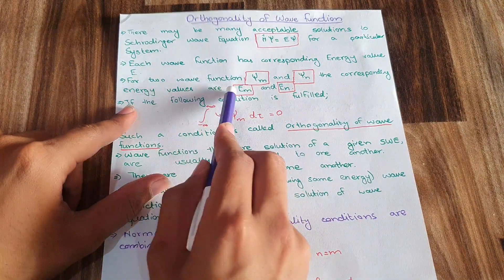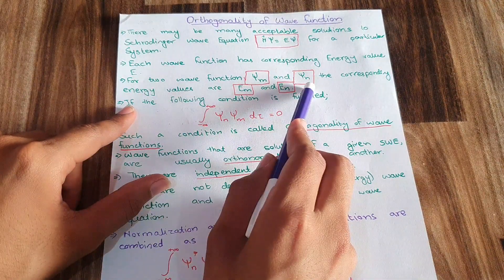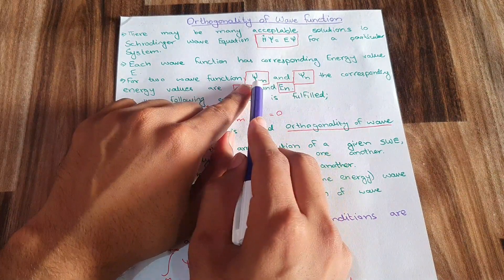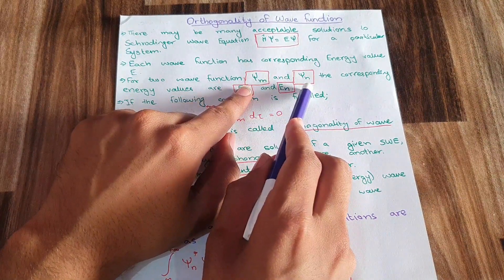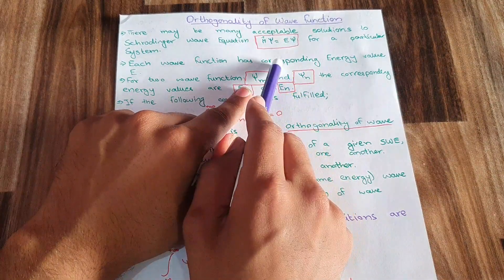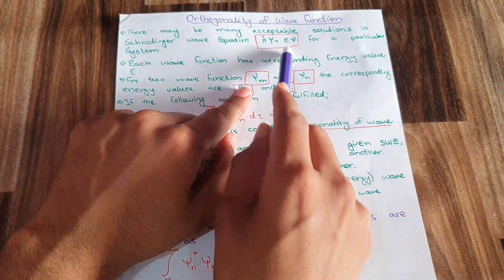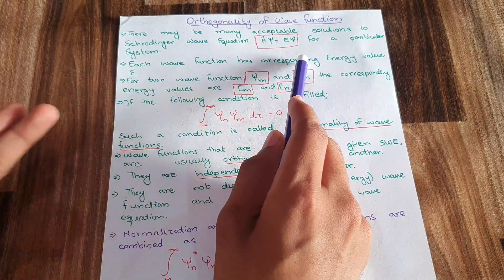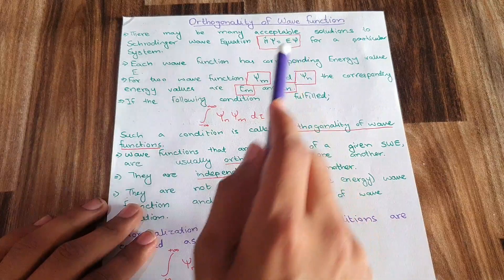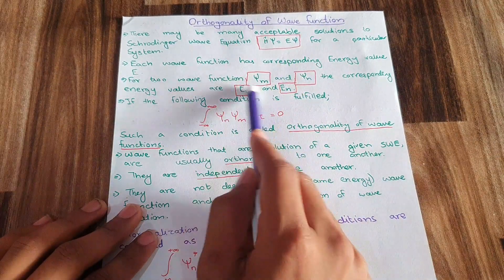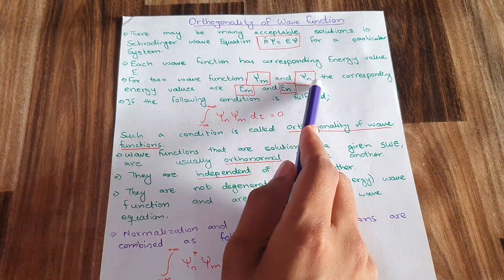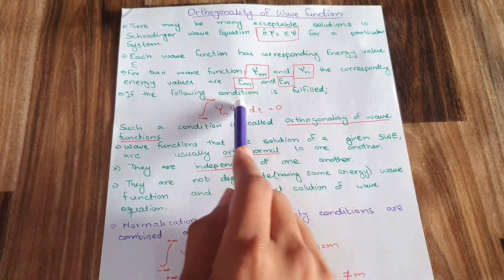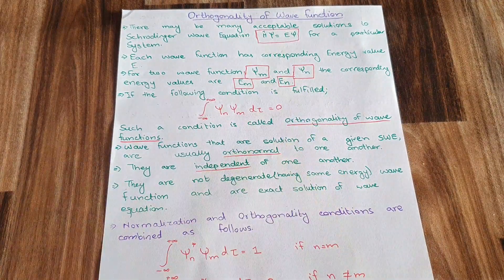For two wave functions ψ_m and ψ_n — which come from the acceptable solutions of the Schrödinger wave equation — we consider them at energies E_m and E_n respectively. So ψ_m has energy E_m and ψ_n has energy E_n.